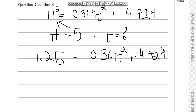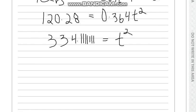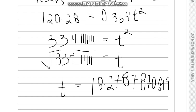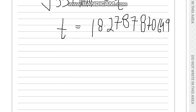We plug 5 here. Now we subtract 4.724 from both of these sides, and now we divide 0.364 from both of these sides. Now that we're left with t squared, we need to get t, so we square root this value. We get our t value as 18.2787 or we can write it as t equal to 18.3 years.